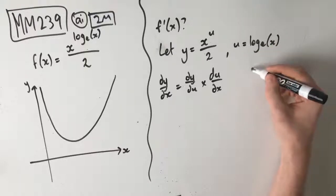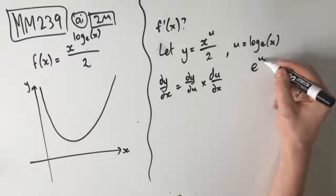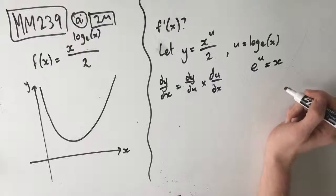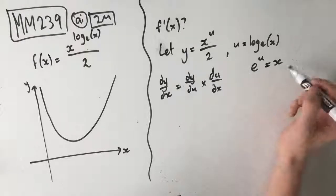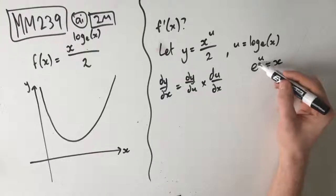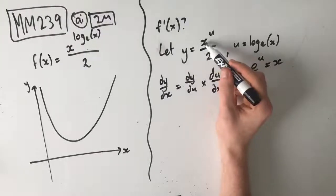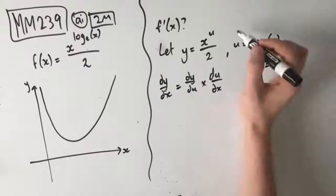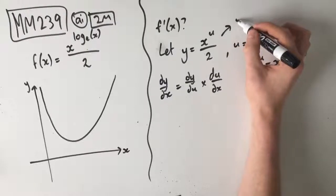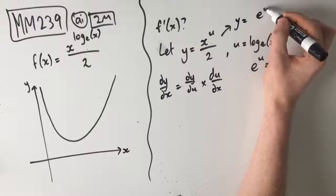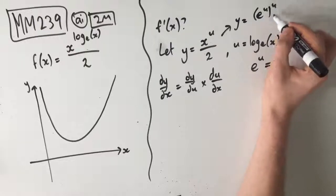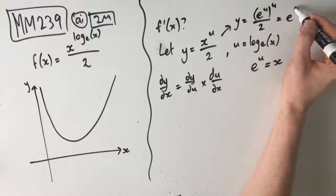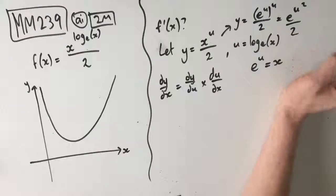We take u equals log e of x and rearrange it to get e to the power of u equals x, which means x equals e to the power of u. So we can replace this x with e to the power of u. From here, we can say that y equals e to the power of u, to the power of u over 2, which means we get e to the power of u squared over 2.